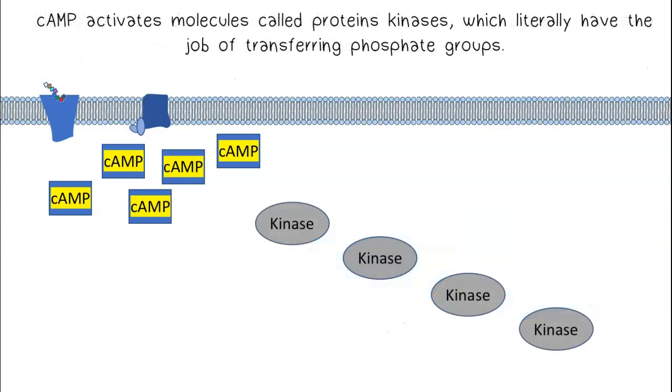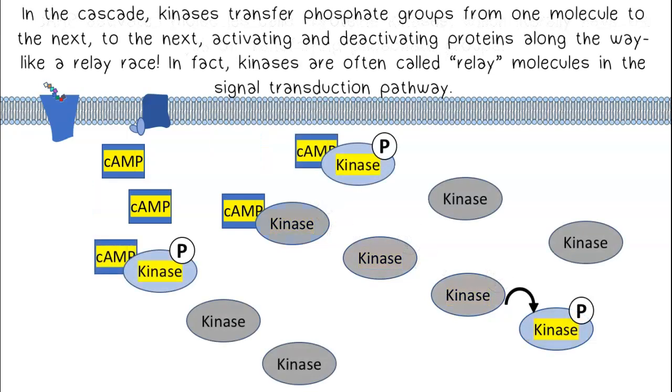Cyclic AMP activates molecules called protein kinases, which literally have the job of transferring phosphate groups. In the cascade, kinases transfer phosphate groups from one molecule to the next to the next, activating and deactivating proteins along the way, like a relay race. In fact, kinases are often called relay molecules in the signal transduction pathway.